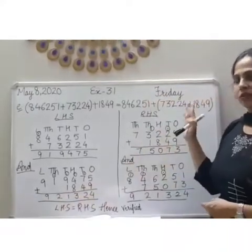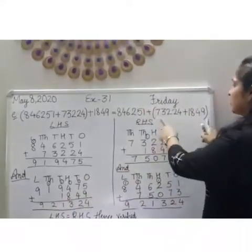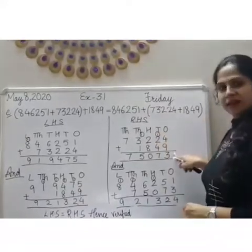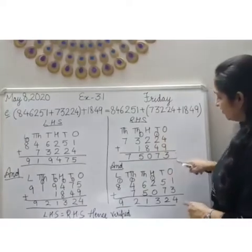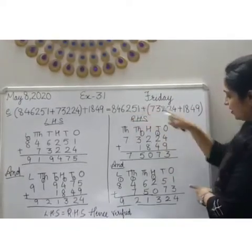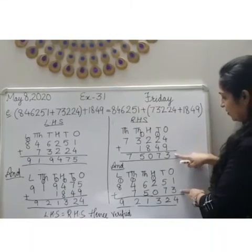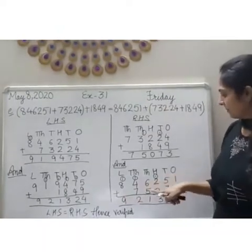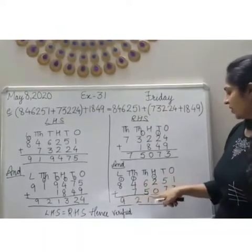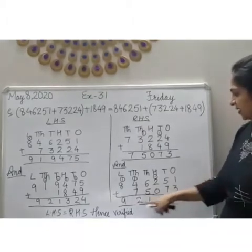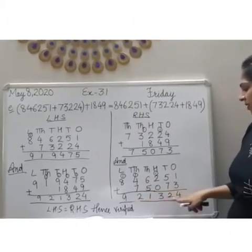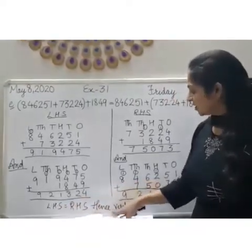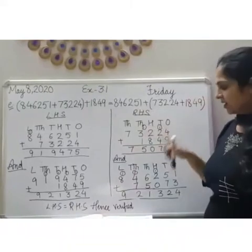Now we will solve RHS. These two numbers are in brackets, so we will solve these two numbers first. We will add them and get the sum. Then we add the first number, 8,46,251, plus 75,073, and we get the sum 9,21,324. Again LHS is equal to RHS. Hence our associative property of addition is verified.